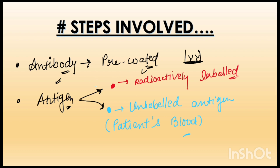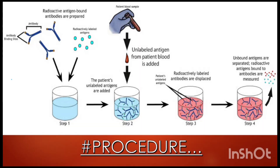The radioactively labeled antigen is lab-produced and is commercially available in the field of lab areas. The unlabeled antigen from patient blood is our sample. Because blood is our sample that we want to detect, this acts as the sample. So these are the three components we need to perform RIA.